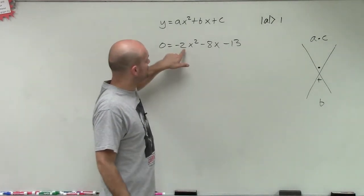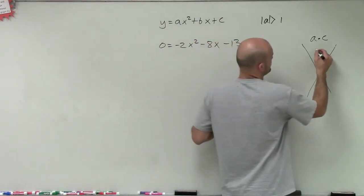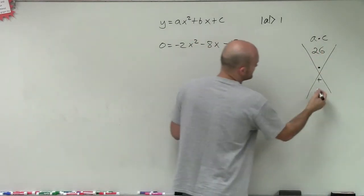All right, so the first thing I need to do is a times c. So negative 2 times negative 13 is going to be a positive 26. And then our b is negative 8.